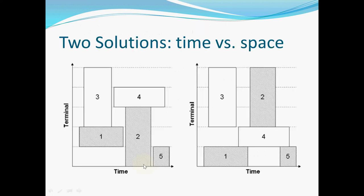Usually, for this first template, this is optimal because vessels one to five belong to one group and three and four belong to another group. This means vessel one would transship containers to vessel two, and vessel two to vessel five, and similarly for three and four. In this template, vessel one can directly transfer containers to vessel two without moving a lot, so the transportation cost is very low.